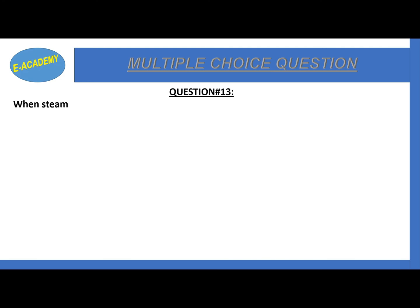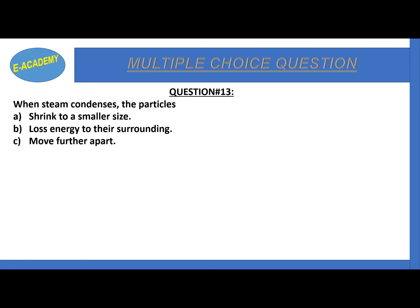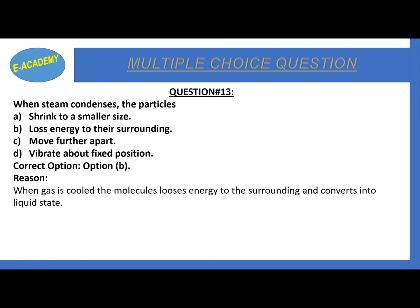Question number 13: when steam condenses, the particles shrink to a smaller size, release energy to their surroundings, move further apart, or vibrate about fixed position? Steam is vapor, and when vapor condenses it loses kinetic energy. The correct option is B - releases energy to their surroundings. When gas is cooled, the molecules lose energy to the surroundings and convert into liquid state.